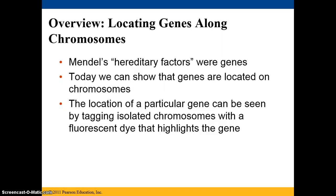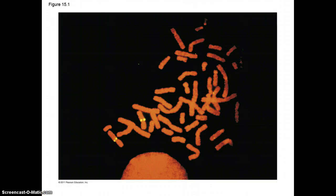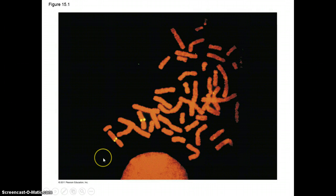Mendel's hereditary factors are genes as we know them today. We can show that genes are located on chromosomes. The location of a gene can be seen by tagging isolated chromosomes with a fluorescent dye that actually highlights the gene. If you look at this picture, you can see these yellow portions, and this is where a particular gene has been tagged.